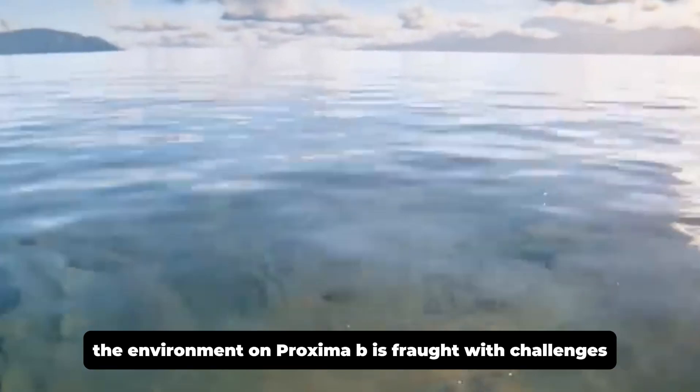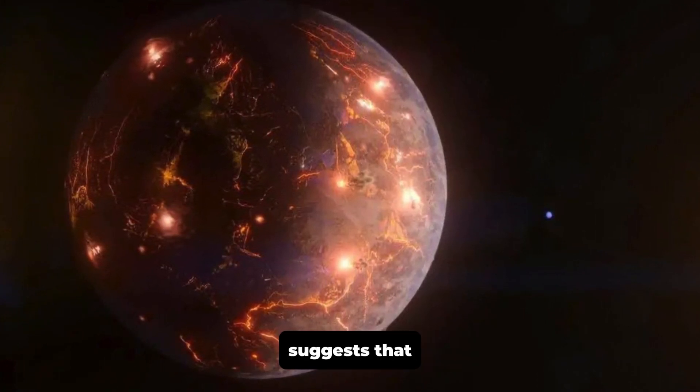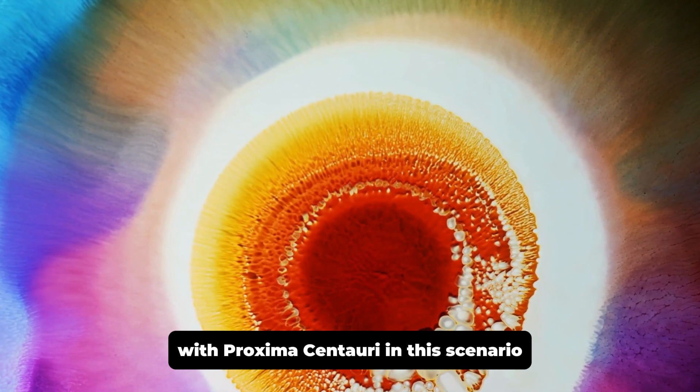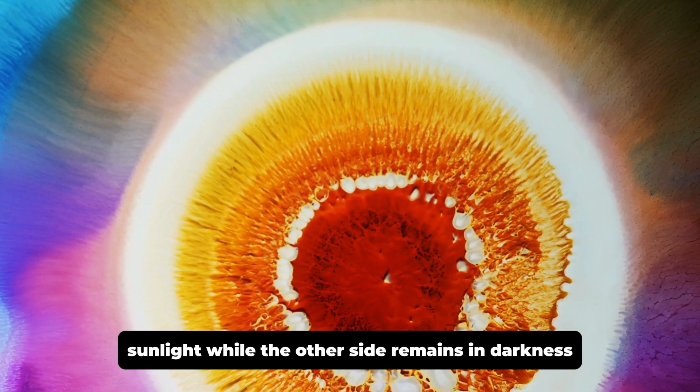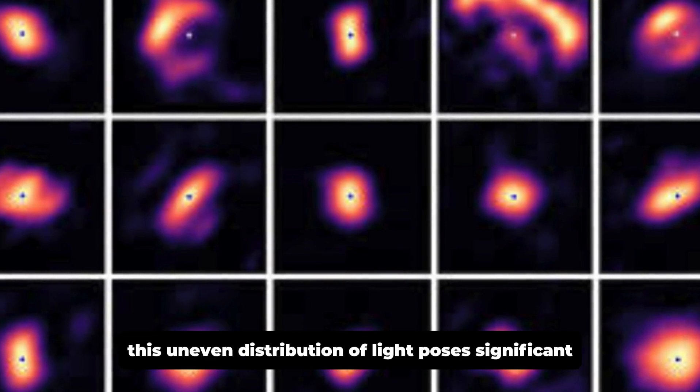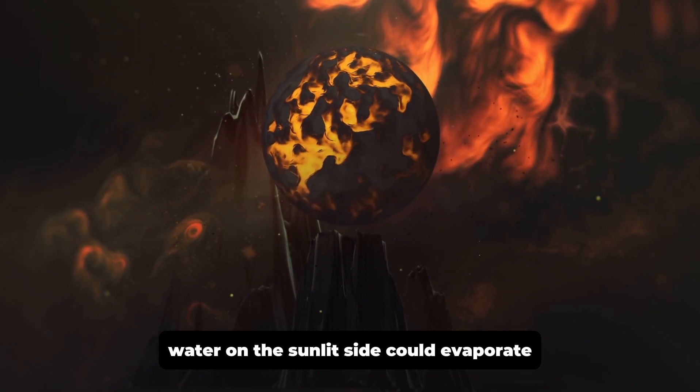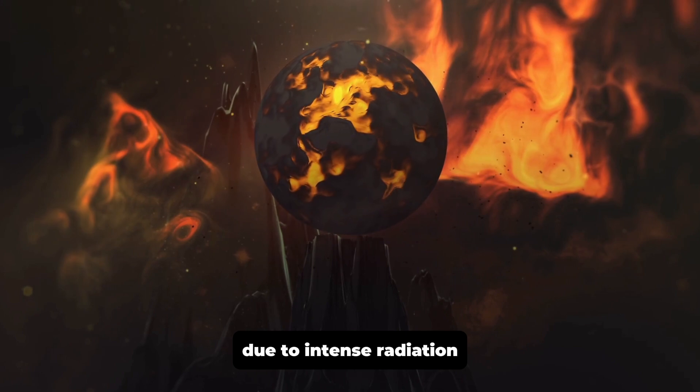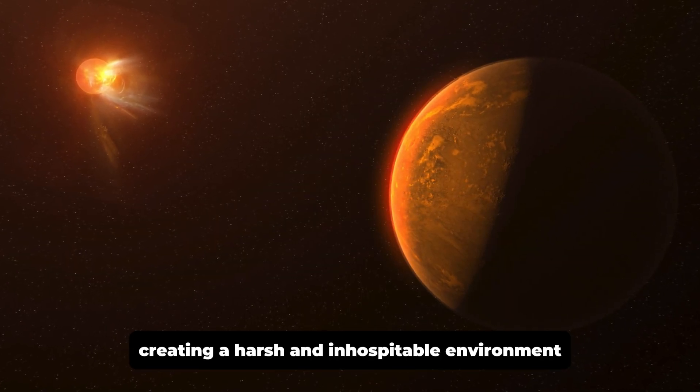One prevailing hypothesis suggests that the planet may be in a state of tidal lock with Proxima Centauri. In this scenario, one side of the planet would be exposed to perpetual sunlight, while the other side remains in darkness. This uneven distribution of light poses significant obstacles for potential life forms. Water on the sunlit side could evaporate due to intense radiation, while the dark side might freeze, creating a harsh and inhospitable environment.